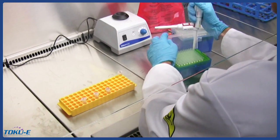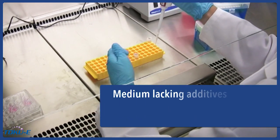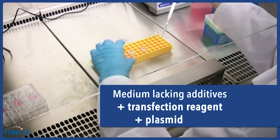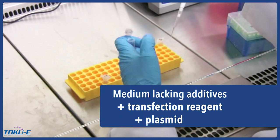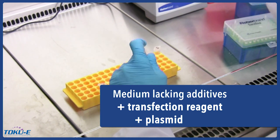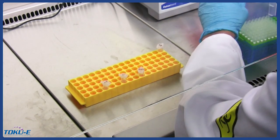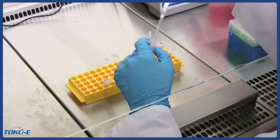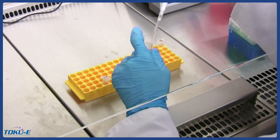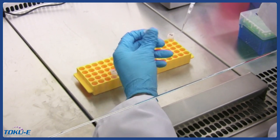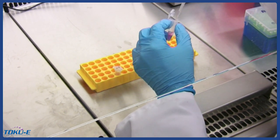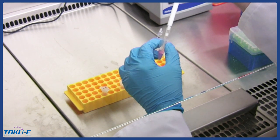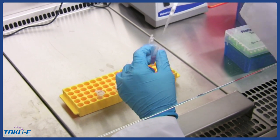Generally speaking, the transfection step involves simply mixing medium lacking additives with the transfection reagent and plasmid, incubating the mixture, and adding it to the non-transfected cells. The protocol obtained from the transfection reagent of your choice will specify these parameters. The protocol we obtained from this transfection reagent manufacturer calls for mixing the medium lacking additives with the transfection reagent and plasmid by pipetting up and down.